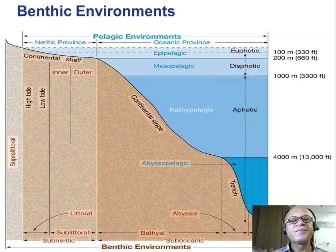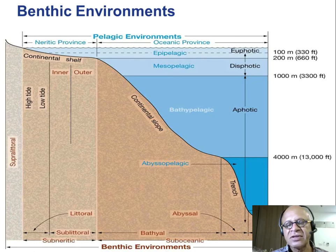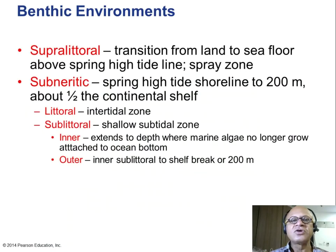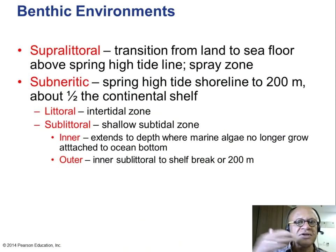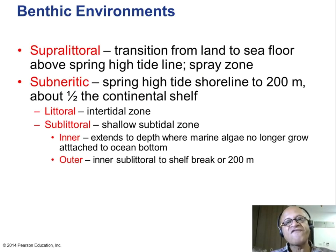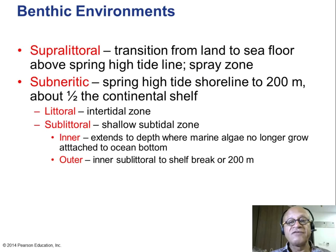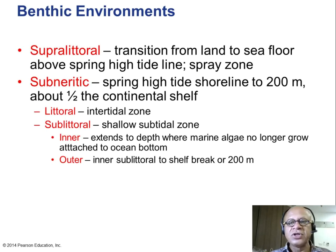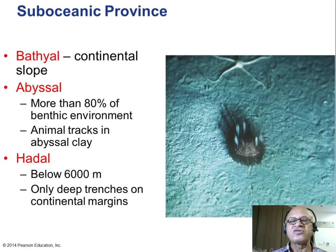Benthic environments we talked about include the continental shelf, continental slope, trench, and the benthos — the bottom of the ocean. The supralittoral is the transition from land to sea, related to the tidal zone. It's also called the spray zone, typically above the water level except during tsunamis or big storms. Even in spring tide it's above the waterline. The sublittoral is basically how far the spring high tide goes on the shore — you have the intertidal zone and shallow sub-tidal zone.